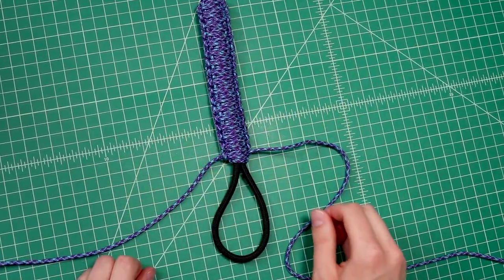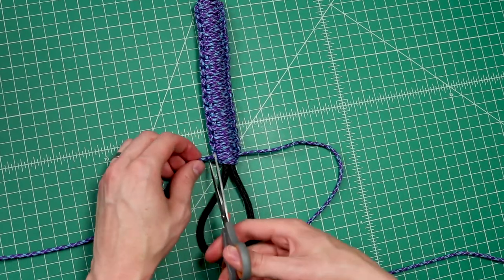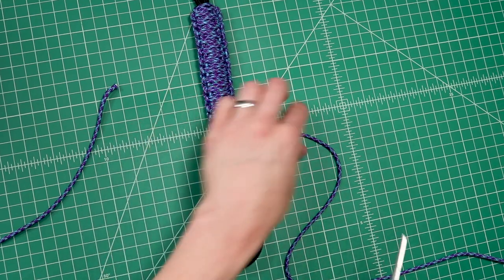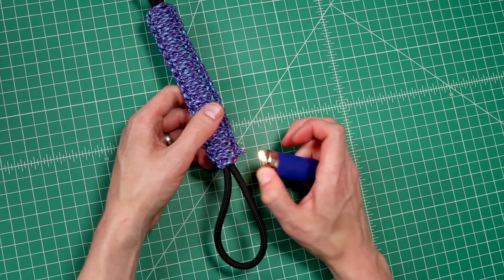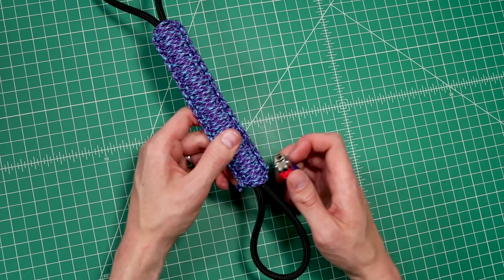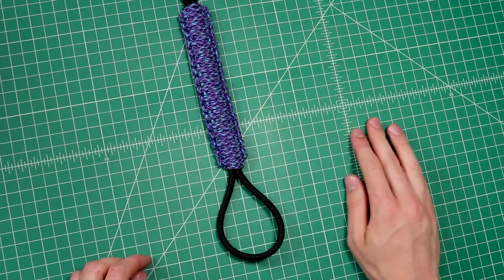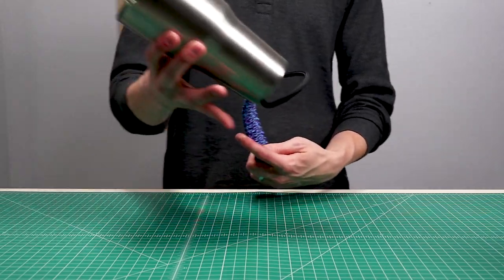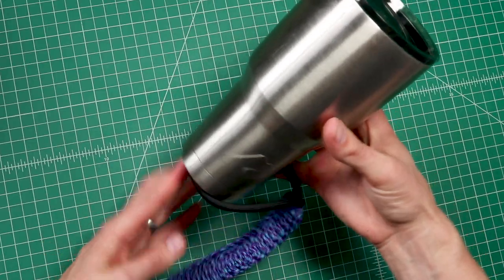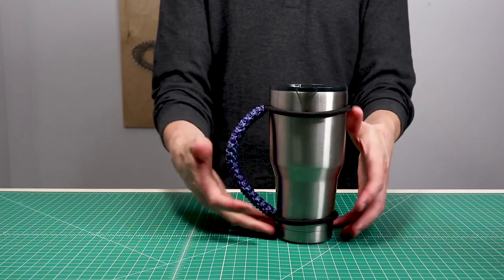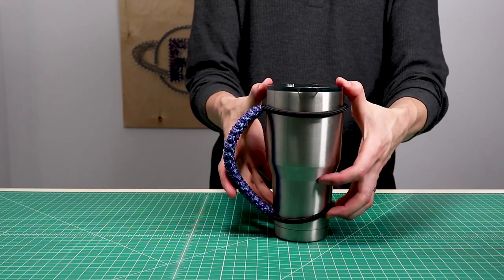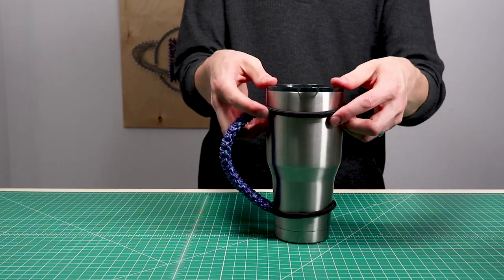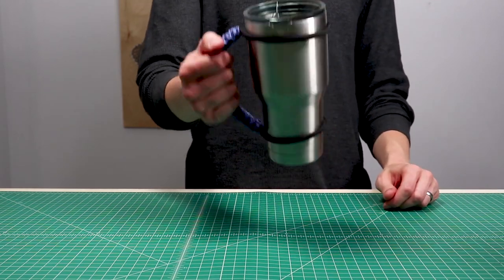Now all there's left to do after tightening that down is to clip the ends and melt them. And that's all there is to it. Let's try it on to make sure everything fits. The bigger loop goes on first. There we go. Even better than the test one. And there's your handle.